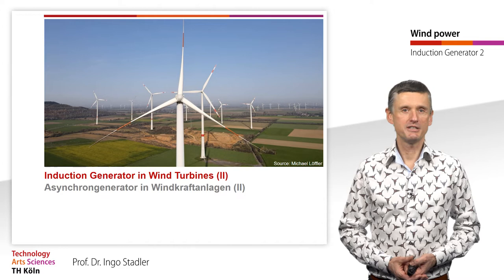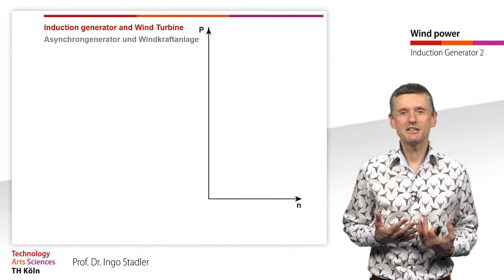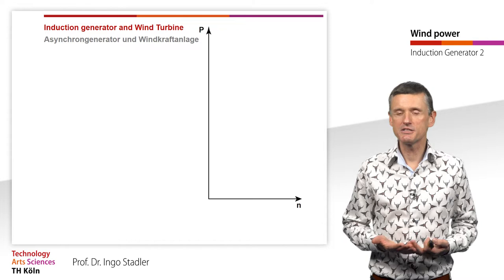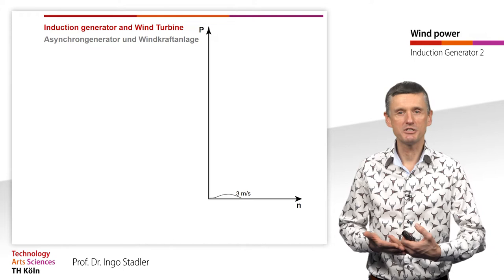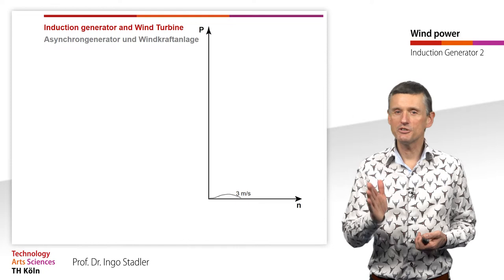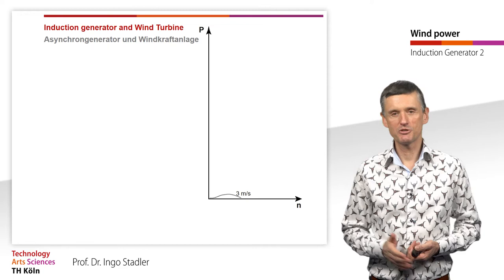Before we do so, we have a look at how the mechanical power is generated by the rotor blades and how this power depends on the mechanical rotor speed. When we look at the behavior at only 3 meters per second of wind velocity, we see it's a small power, but also here there's a certain speed where this power is maximum, but it's on the left side.